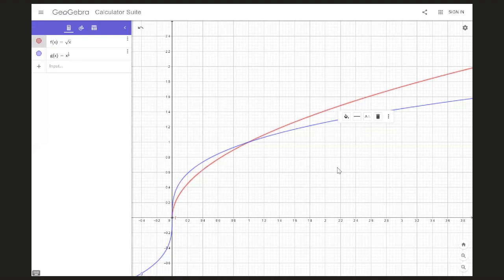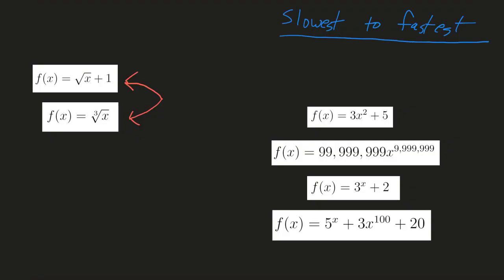So that means that the cubed root of x is going to grow slower than the square root of x, and that tells us how to plug in those last two functions on that little table that we're doing.